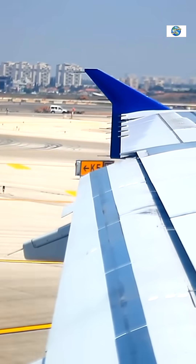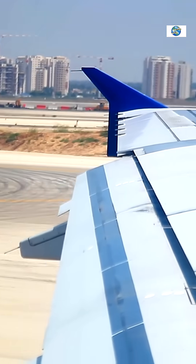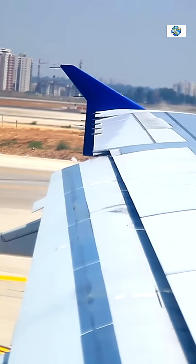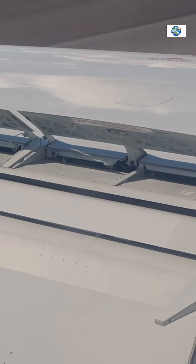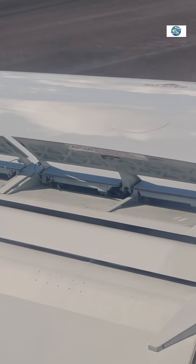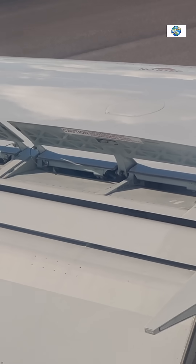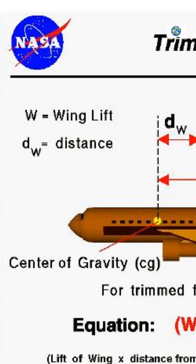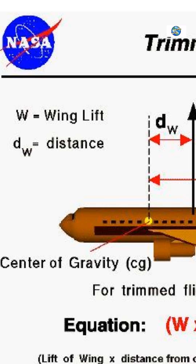The spoilers on an aircraft are typically located on the upper surface of the wings, near the center line or closer to the trailing edge. They are arranged in panels that span part of the wing's upper surface, often positioned between the ailerons near the wingtips and the wing's root near the fuselage. Their position allows them to disrupt the smooth airflow over the wing effectively, reducing lift and increasing drag when deployed.